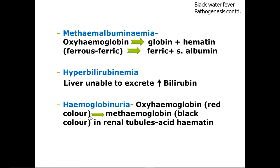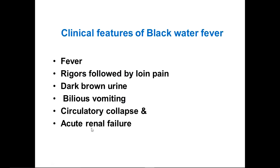The oxyhemoglobin, which is reddish in color, gets converted into methemoglobin, which is black in color. This happens in the renal tubules or is deposited in the tubules as acid hematin. The color of urine is dark brown in blackwater fever because of this methemoglobin. Clinical features include fever and rigors followed by loin pain — the area on the side of the body below the rib cage to just above the pelvis. Direct and indirect bilirubin rise, and there can be vomiting, liver failure, and even acute renal failure, with rising serum urea and creatinine.